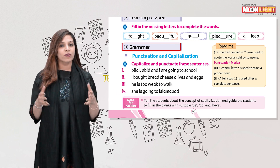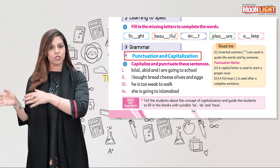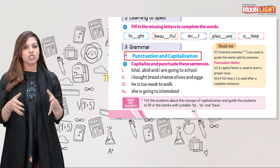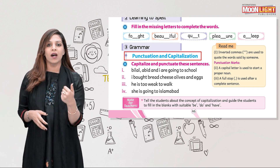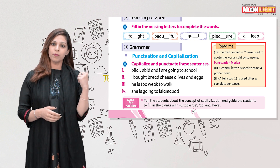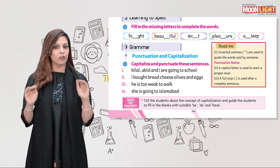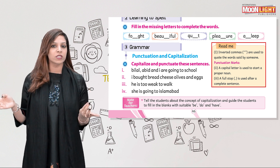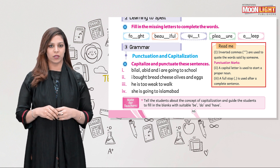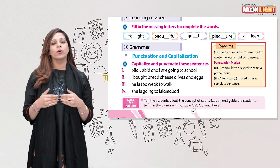Let's move to our next category: grammar. The topic is punctuation and capitalization. Punctuation marks include full stop, comma, and inverted commas. A full stop is used at the end of a statement. If it is a question, we use a question mark. Inverted commas are used to quote the exact words spoken by someone.